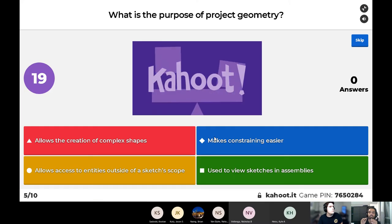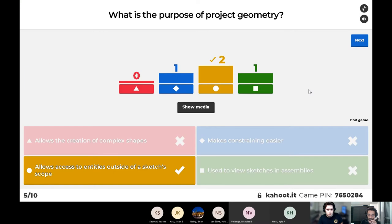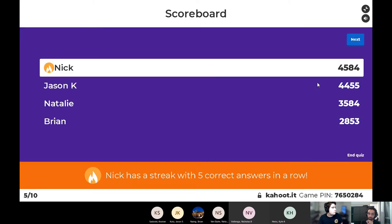What is the purpose of project geometry? Is it a function in Inventor? This was a bit divided. It allows you to access entities outside of a sketch's scope. Technically it does make constraining easier. You don't get to view sketches in a second phase. That's not exactly what this is. The second option is a result of the third part. So that is why this is the correct answer. You can also create complex shapes, but again, that's because of this thing.